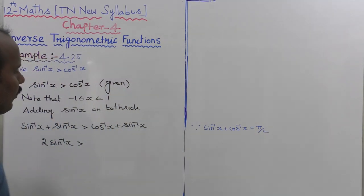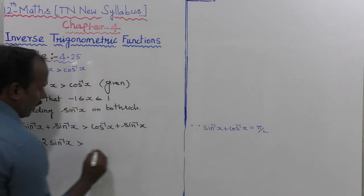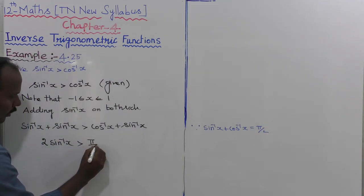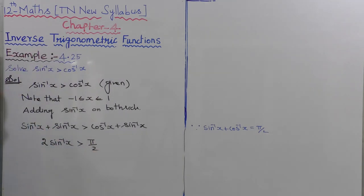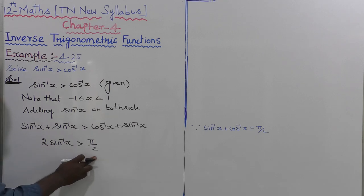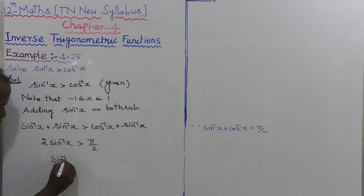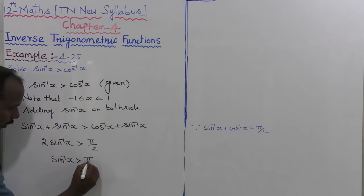Using the formula sin⁻¹(x) + cos⁻¹(x) = π/2, we substitute on the right side: 2·sin⁻¹(x) > π/2. Moving the multiplication to the right side as division gives sin⁻¹(x) > π/4.